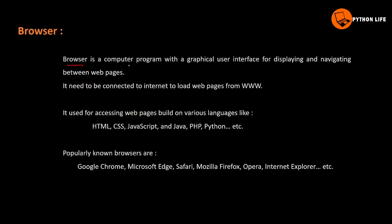The definition of a browser is a computer program with a graphical user interface for displaying and navigating between web pages. It is like an application — you can use a browser app on your phone. It has a graphical user interface with colors, animations, and buttons like backward, forward, reload, history, and download.